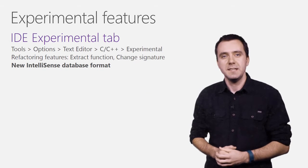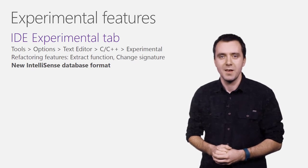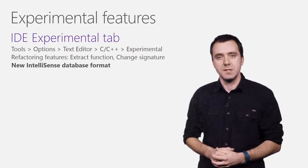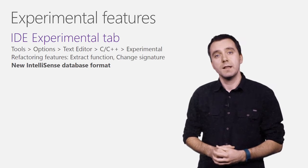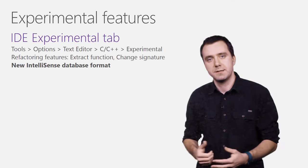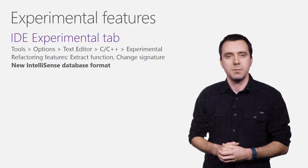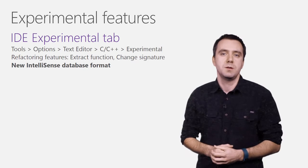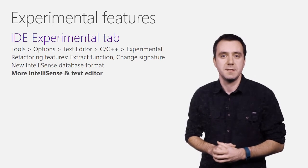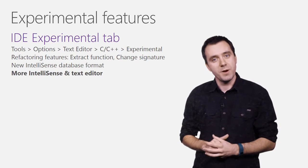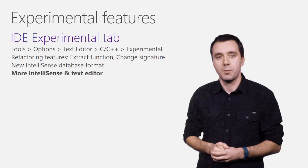Another feature in the IDE is the introduction of a new file format for our symbol database. This will allow our IntelliSense engine to scale beyond the limits of our current database engine, as well as provide faster indexing and better search capabilities. We are continuing work on tuning the new database and would love to hear from you about the improvements you're seeing. These are just a few of the new experimental IDE features in Update 1—discover the rest by going to the Experimental tab in Tools > Options.